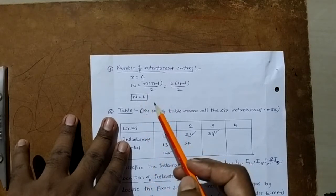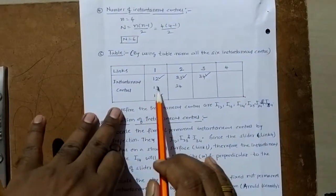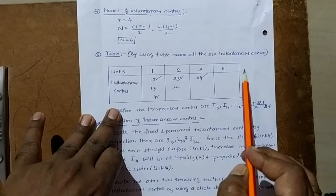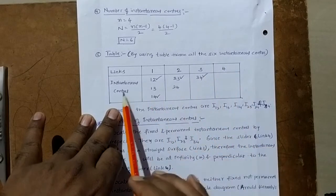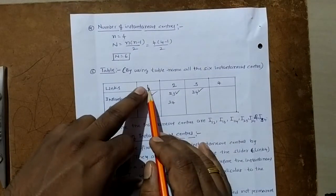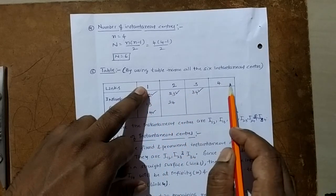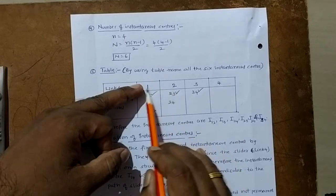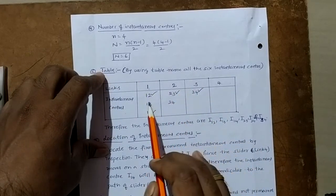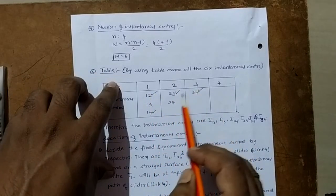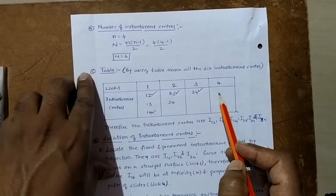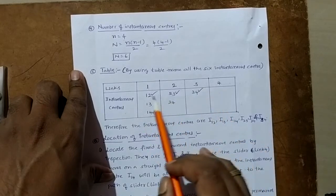We should know the names of all the instantaneous centers with the help of a table. Write the links 1, 2, 3, 4 in a row. Then write the combinations: 1-2, 1-3, 1-4 for link 1. Then 2-3, 2-4 for link 2. Then 3-4 for link 3. After link 4 there are no more combinations. Totally there are 6 instantaneous centers: I12, I13, I14, I23, I24, and I34.